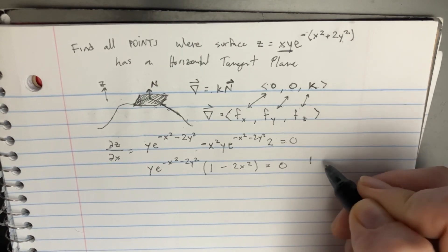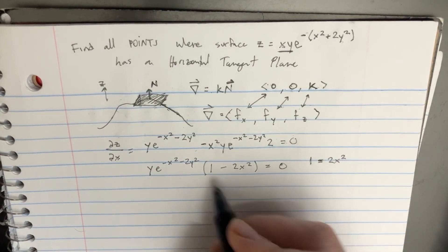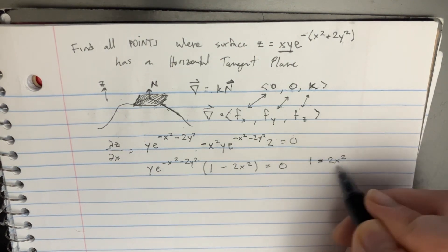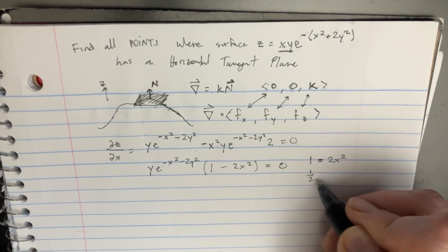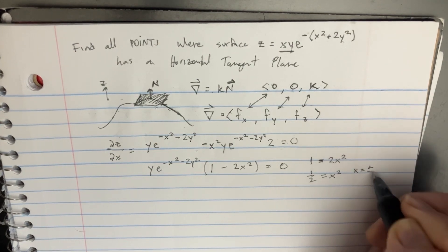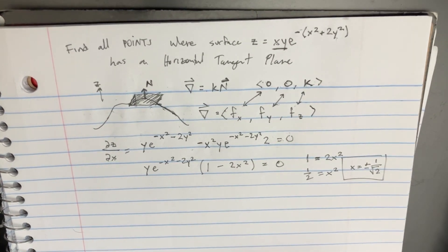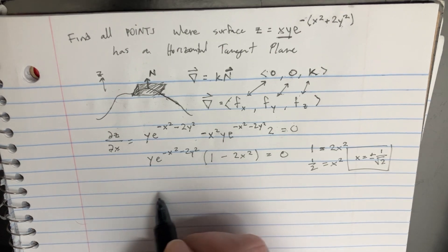And so we can set 1 minus equal to 2x squared, because that's just how we can rearrange that. So we're going to get 1 half equals x squared, and then x equals the plus or minus the square root of 1 over the square root of 2. Okay, that's kind of going to work like that. This is for our x point.